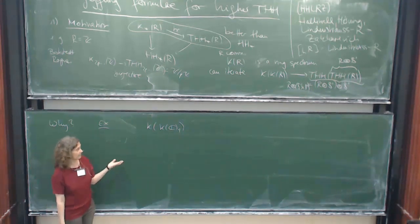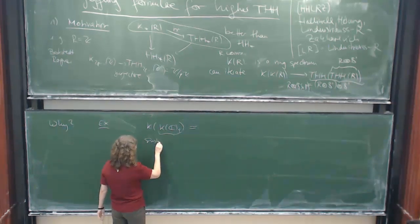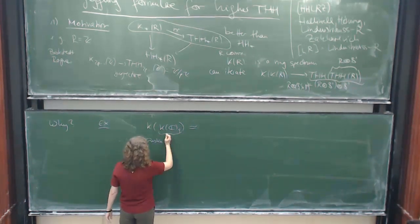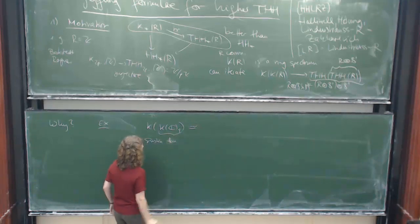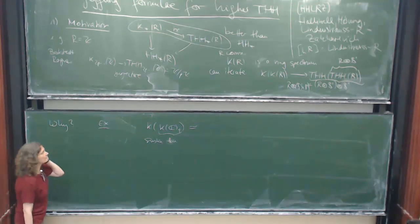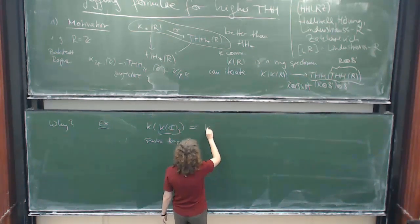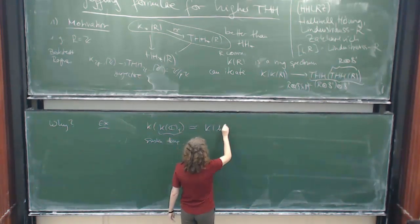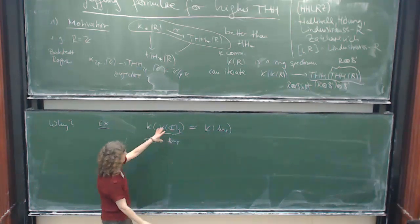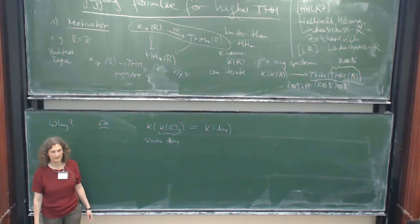If you p-complete K-theory of the complex numbers at your favorite prime, then build K-theory. Well, Suslin tells you that this is little K-u. So topological complex K-theory. So here you get, well, completed at p. I might forget this sometime.